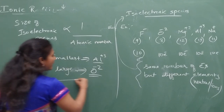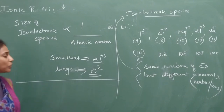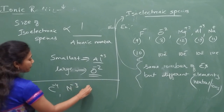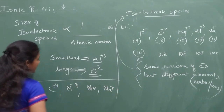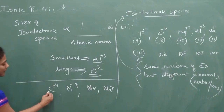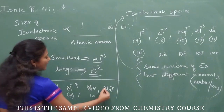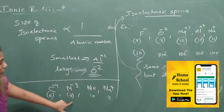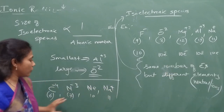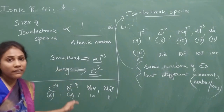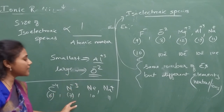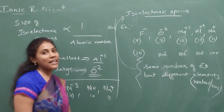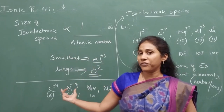Just focus on this trick and you can easily find answers for such questions. Now a quick practice question: arrange C4-, N3-, Ne, and Na+ — all isoelectronic species with 10 electrons each (C: 6+4=10; N: 7+3=10; Ne: 10; Na: 11-1=10). Which is the largest species and which is the smallest? Send your answers in the chat box. That is all about ionic size, isoelectronic species, and the types of questions that can be framed on this concept.